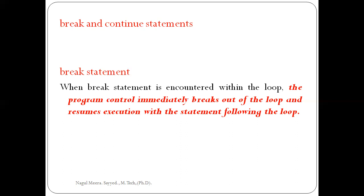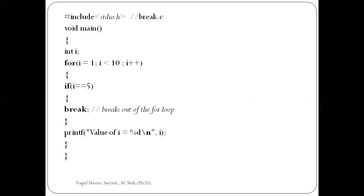Here is an example showing how the break statement is executed. This simple program is named break.c. It includes the header file, declares integer variable 'i', and uses a for loop: 'for(i=1; i<10; i++)'. Inside, there is a condition: 'if(i == 5) break;', followed by 'printf("value of i = %d", i);'. Without the break, this loop prints 1 to 10 numbers.